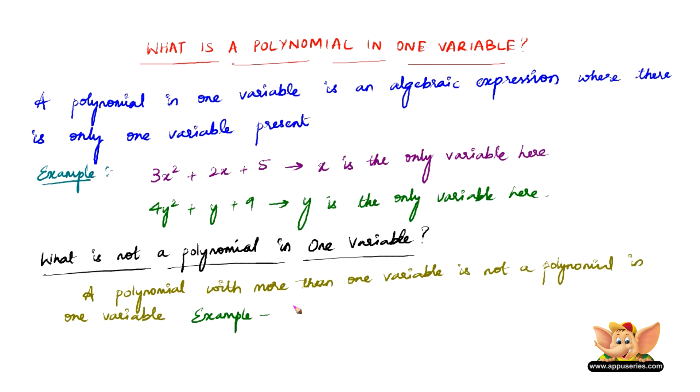Let us see some examples. Let us take 3x squared plus 2y plus 5. Now here, in this algebraic expression, there are more than one variable, that is x and y are the variables here.